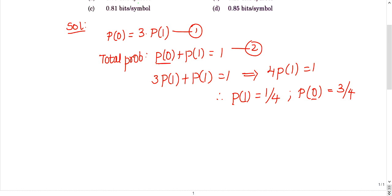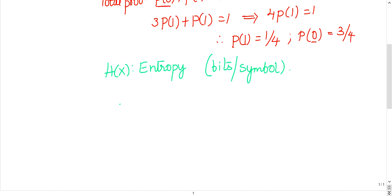Entropy is denoted with the letter H of x. H of x is entropy, units are bits per symbol. Try to remember. Entropy is given as sigma p log 1 by p, meaning p of x log base 2, 1 by p of x. This is the formula. Let's substitute the symbol probabilities to get the answer.